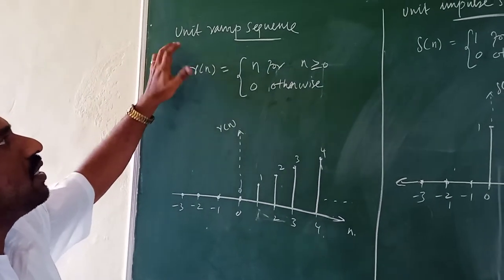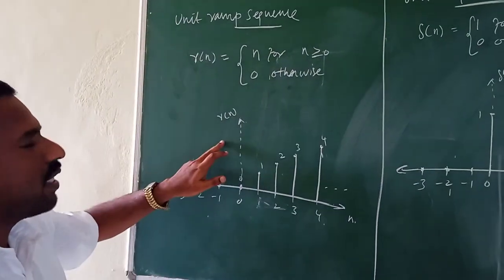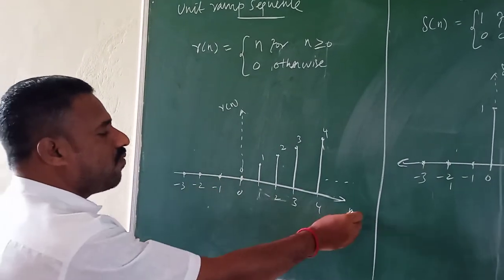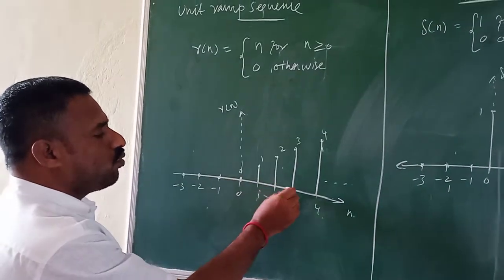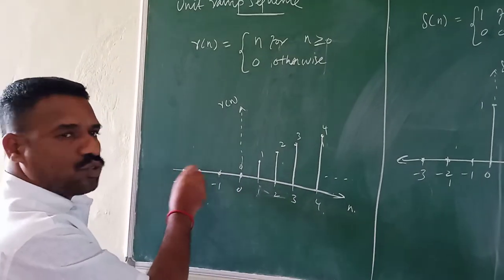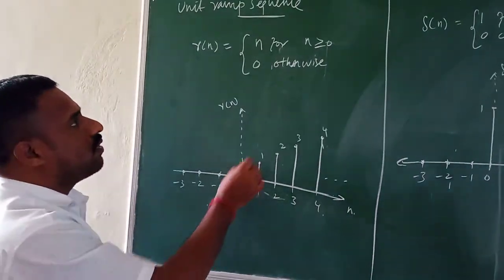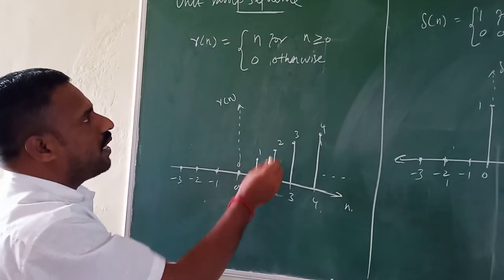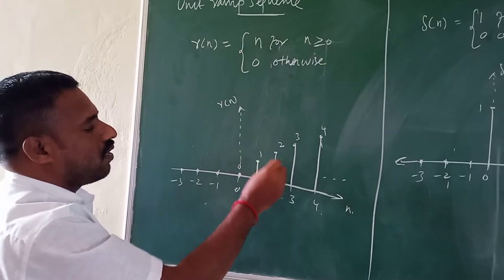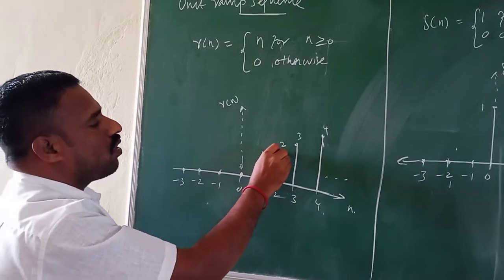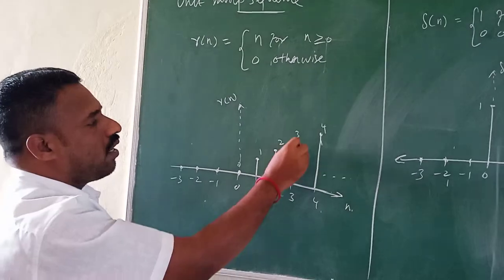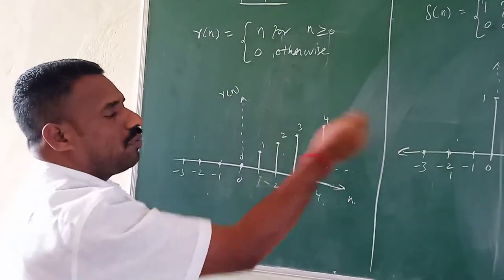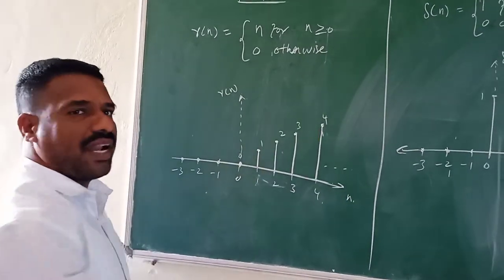How can we represent this unit ramp sequence? Here the y-axis is R of n and the x-axis is the n value: 0, 1, 2, 3, 4, and minus 1, minus 2, minus 3. So when n equals 0, R of n equals 0. When n equals 1, R of n equals 1. When n equals 2, R of 2 equals 2. When n equals 3, R of 3 equals 3. When n equals 4, it is 4. This is going to be continuous. This is the ramp signal.